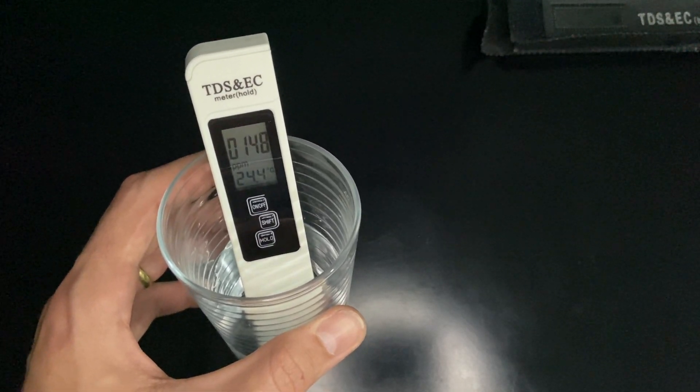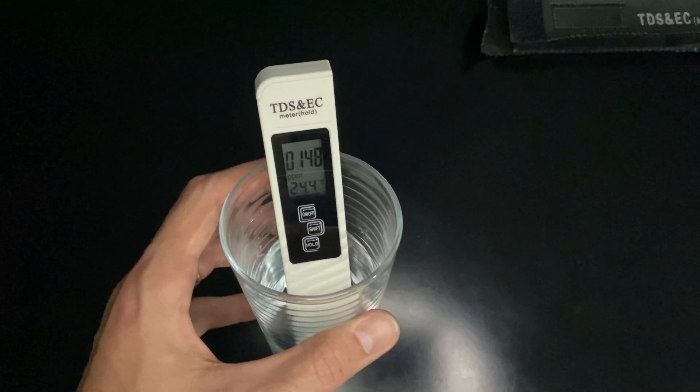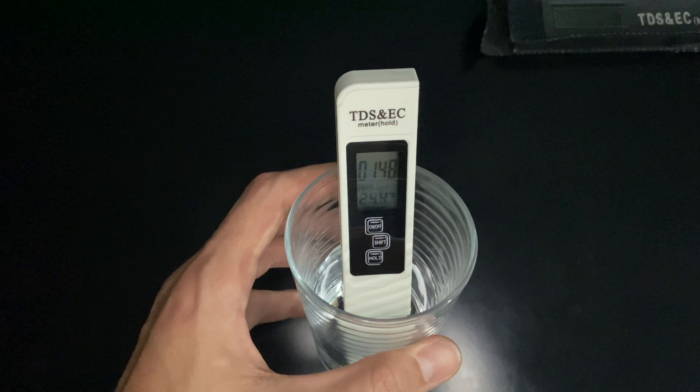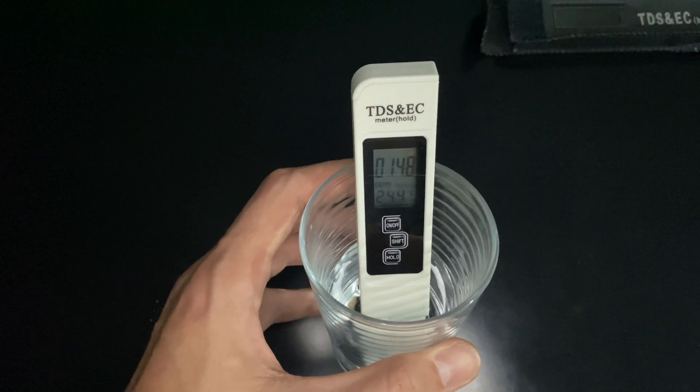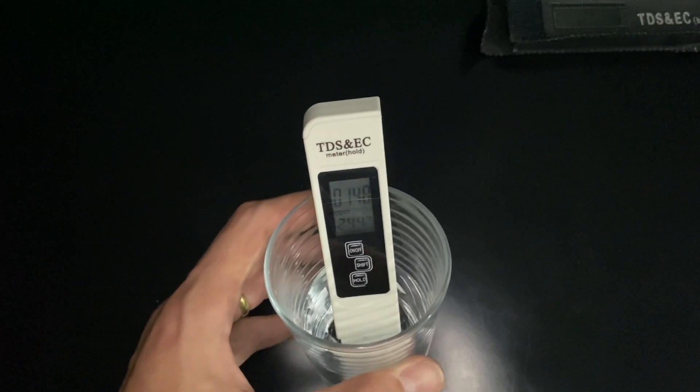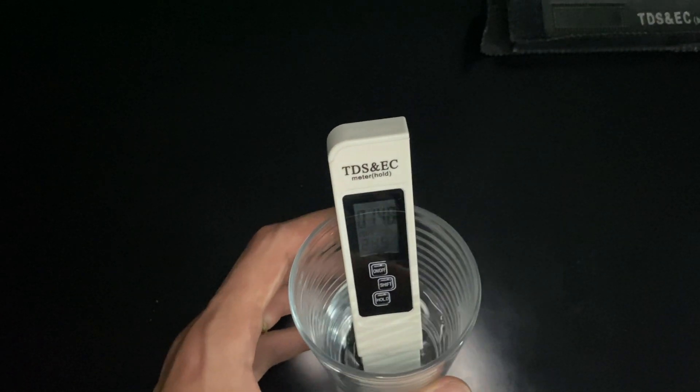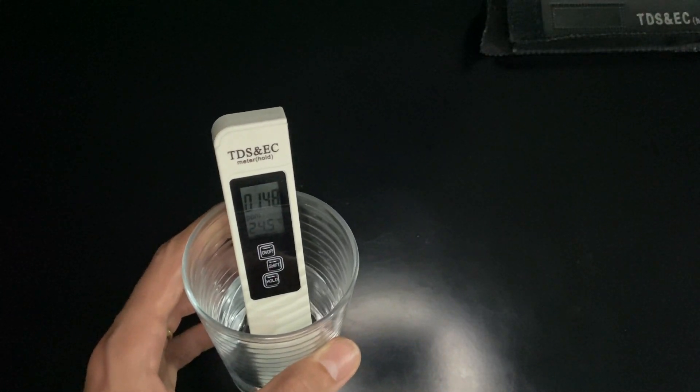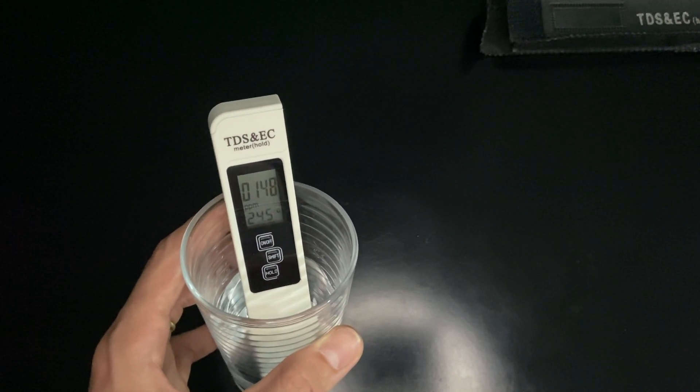From 0 to 300, it's excellent quality. 300 to 600 is good quality. 600 to 900 is acceptable quality. 900 to 1200 is bad quality, and above 1200 is unacceptable. As we can see, the water filtration system is working because it's excellent water to drink.